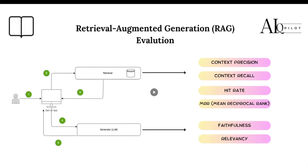At the same time, RAG can help to reduce the hallucination of the model. Hallucinations refer to instances where large language models generate information that is incorrect or not supported by the context. So if we can provide the right context to the model, we can help the model reduce and avoid hallucination.